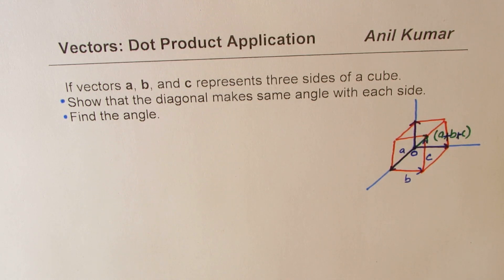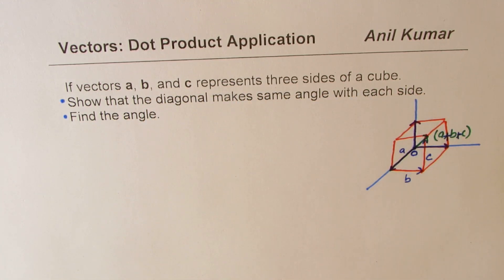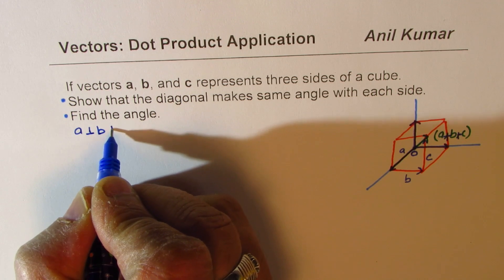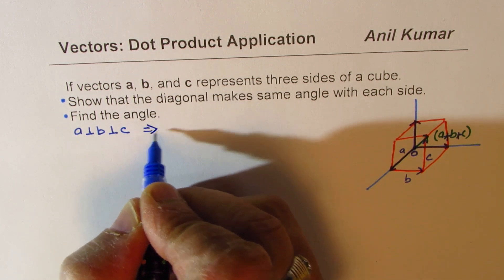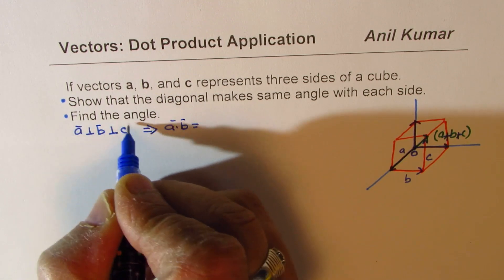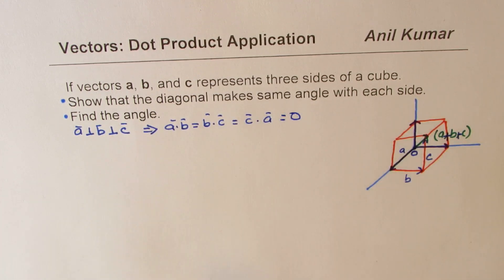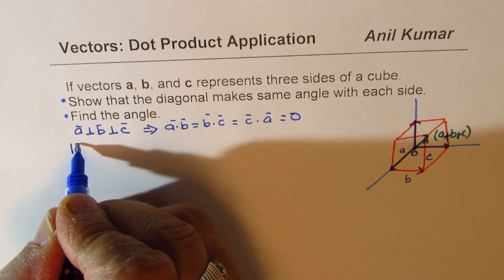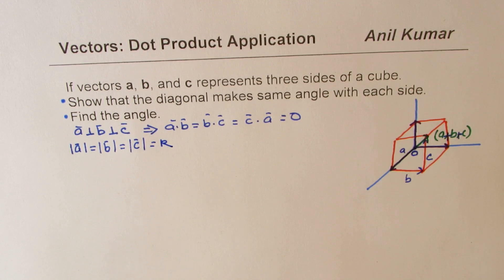What we are given here is that vectors a, b, c represent three sides, which means all of them are orthogonal — vector a is perpendicular to vector b, and also perpendicular to vector c. That basically means a dot b equals b dot c, which also equals c dot a, and all are equal to zero since they are all perpendicular. Since we have a cube, the magnitudes are the same: magnitude of a equals magnitude of b equals magnitude of c. Let us take this magnitude as k.